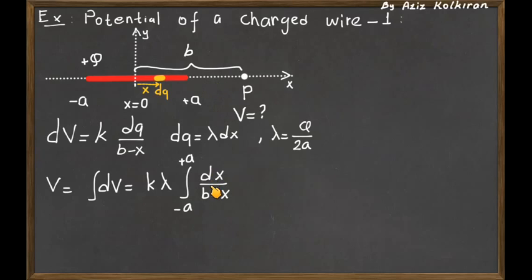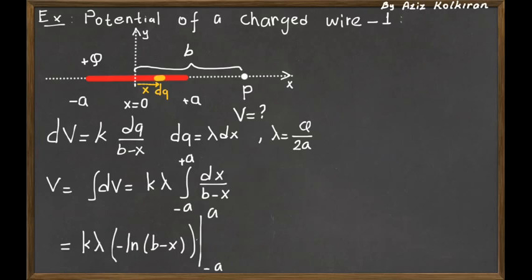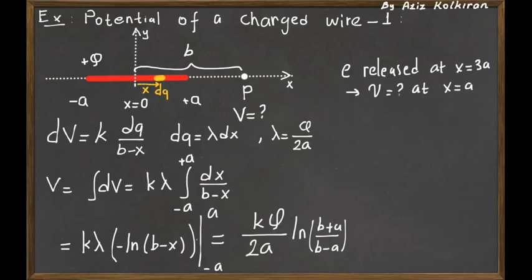Inside the integral we have dx divided by (b - x), and the integral of this quantity is the natural logarithm: -ln(b - x). After applying the integration limits, the result is V = k·(q/2a)·ln[(b + a)/(b - a)].